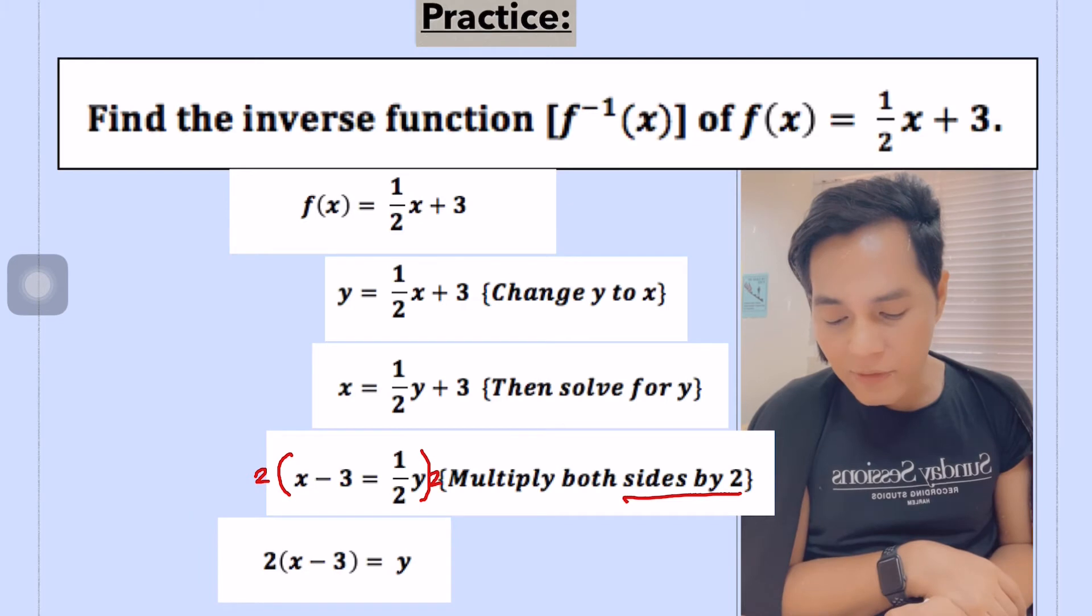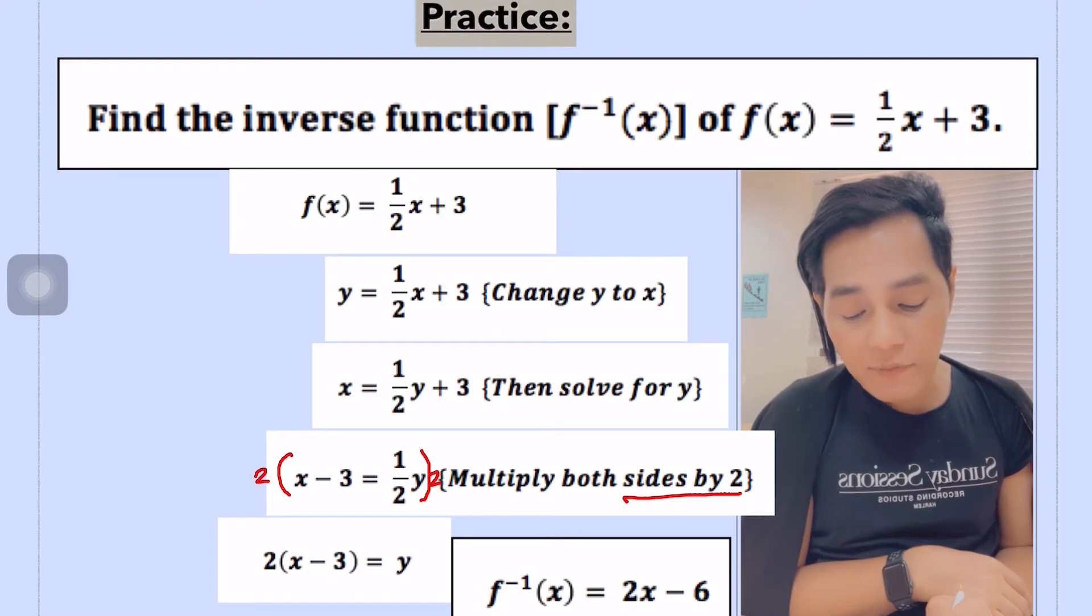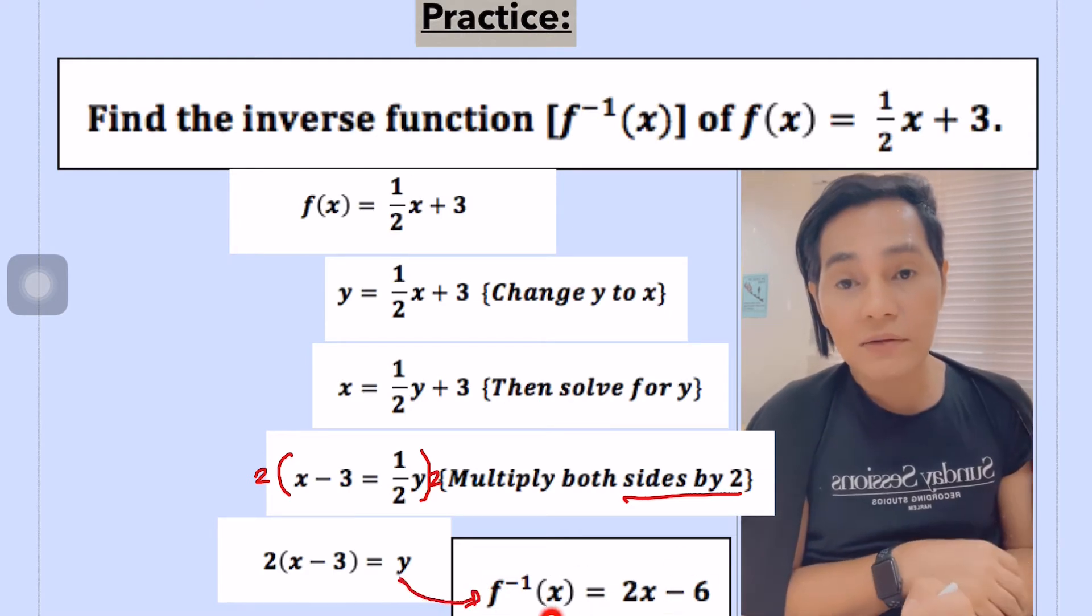So there you go. You have there y is equal to 2 times the difference of x minus 3, 2 times the difference of x and 3. That's the inverse. Now we just change y into f to the power of negative 1 of x equals 2x minus 6. And this is now the inverse of this given function.